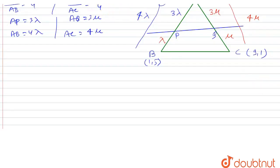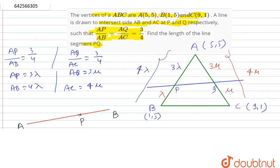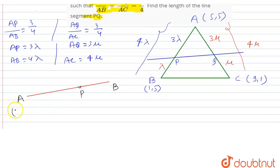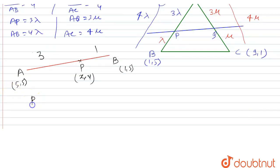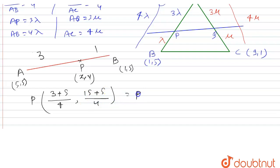Now we take line segment AB where A is (5,5) and B is (1,5), with the ratio 3:1. We have to find coordinates X and Y of P. Using the section formula: X = (3×1 + 1×5) / (3+1) = (3+5)/4 = 8/4 = 2, and Y = (3×5 + 1×5) / 4 = (15+5)/4 = 20/4 = 5. So P comes out to be (2, 5).